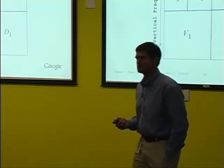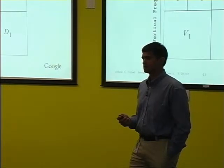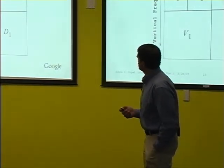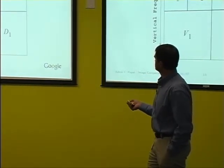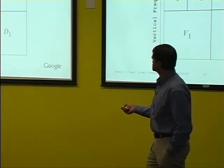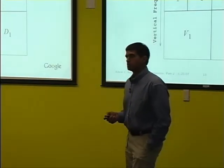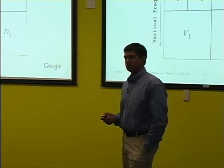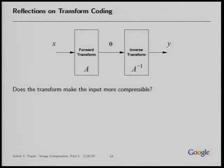A question about whether it's arbitrary not to do recursive decomposition on the low-high and high-low squares: you could argue you might gain a little from doing that, but experience has shown this is a reasonable approach. Ultimately the decomposition you use is the one that in practice gives the best energy compaction.